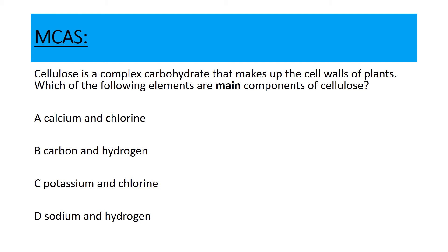Here are two MCAS questions. Cellulose is a complex carbohydrate that makes up the cell walls of plants. Which of the following elements are main components of cellulose? We're talking about the elements that a living thing — plants — are made out of: carbon and hydrogen, nitrogen and oxygen, phosphorus and sulfur. So obviously the answer is B, carbon and hydrogen.